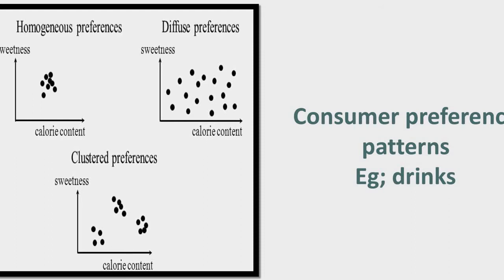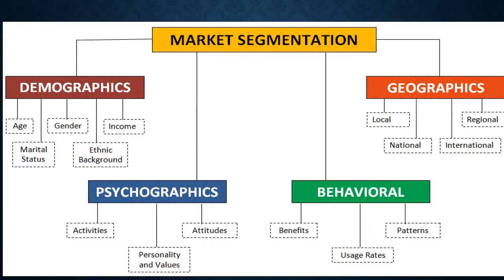On the basis of customer preferences, segmentation can be of different types. We can have segmentation based upon homogeneous preferences, diffused preferences, and clustered preferences. So we can divide the market on the basis of these segments.